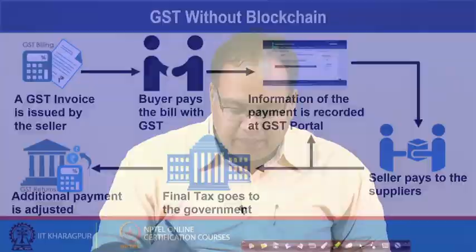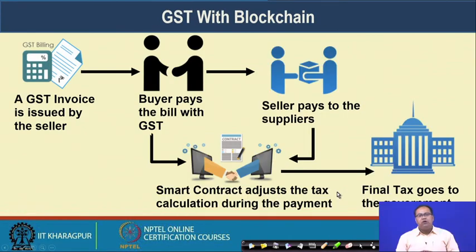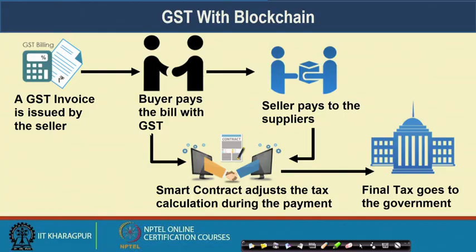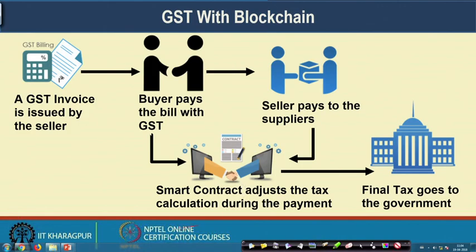Under this kind of scenario, blockchain can be a platform where you can simplify this entire tax payment process, where all things will be done automatically with the help of a smart contract. Similarly, the GST invoice is issued by the seller and the buyer pays the bill with GST; the seller then pays it to the suppliers. All these payments are now done with the help of this smart contract platform.